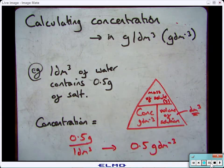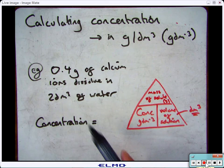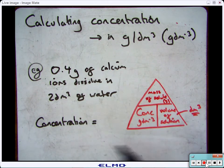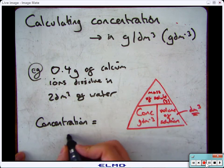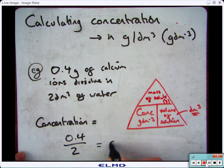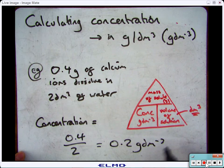So I'll give you another example now. So here it says 0.4 grams of calcium ions dissolve into 2 decimetre cubes of water. So again, concentration is mass divided by volume. So it's 0.4 divided by 2, which is 0.2 grams per decimetre cubed.